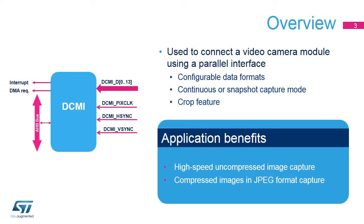The DCMI allows you to perform continuous grabbing. This process starts on application request and continues until the capture bit is cleared. Alternatively, snapshot mode allows you to capture a single frame upon an application request.